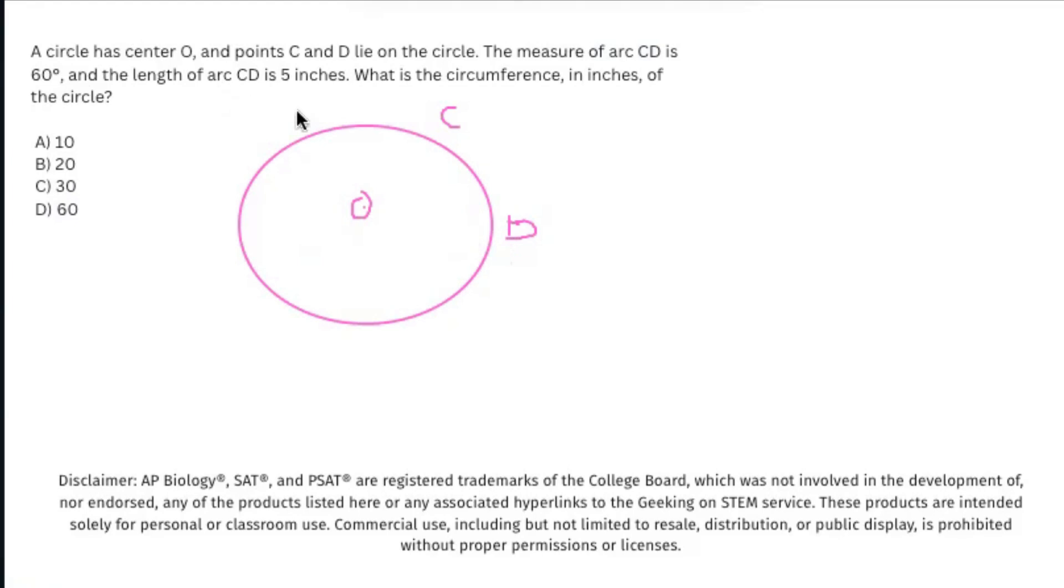They let you know that there's an arc. An arc is a piece of the shape from the center where two points lie, C and D. They let you know that there is an angle, and the angle that is being made is 60 degrees. They let you know the length of the arc is 5 inches. And they want to know the circumference in inches of the circle.